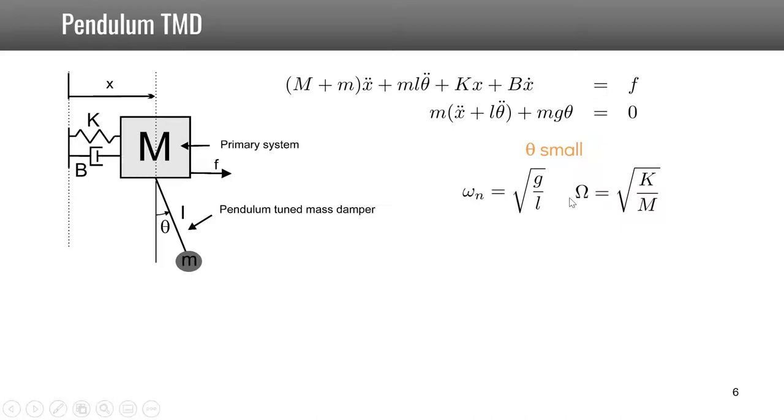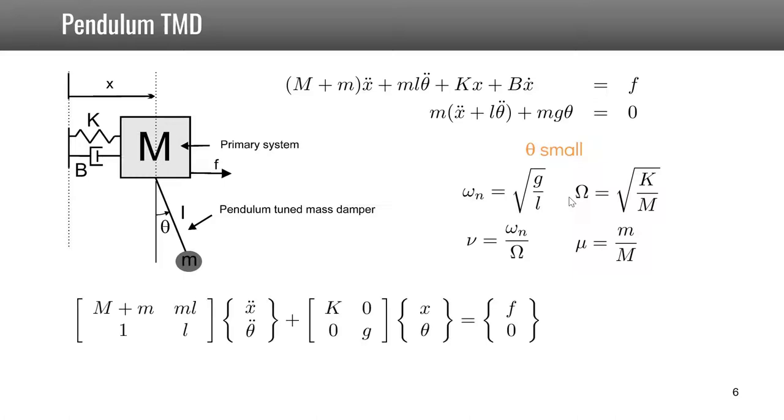Capital Omega is the natural frequency of the primary system, and we also define the frequency ratio nu and the mass ratio mu as before. This is then the equations of motion. You see that now the coupling between the equations is on the mass matrix and not anymore on the stiffness matrix.